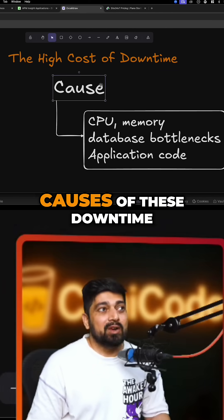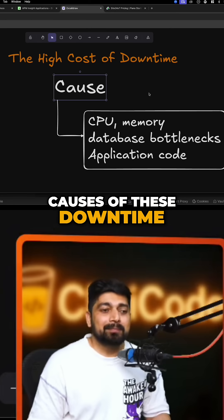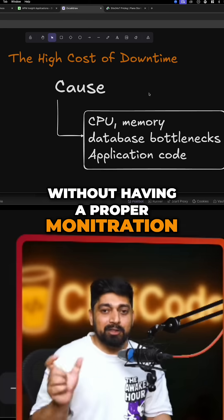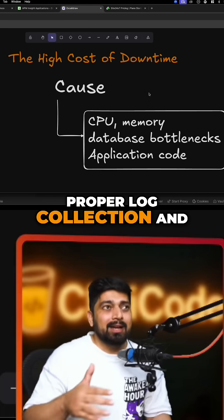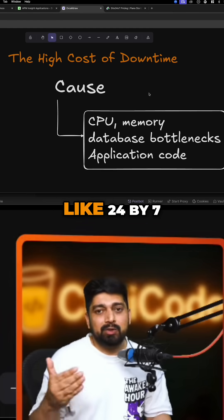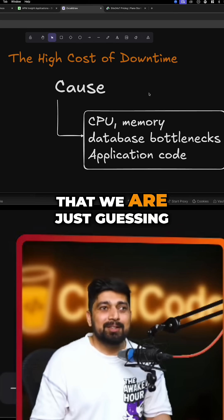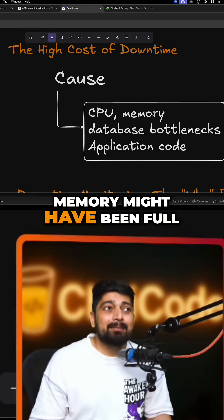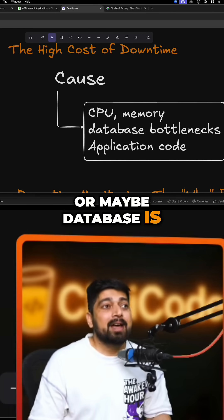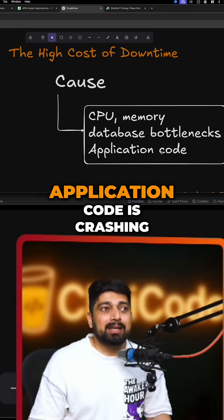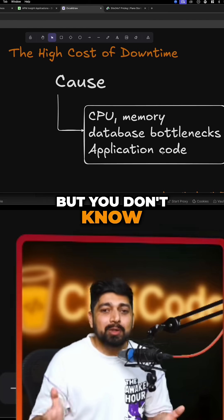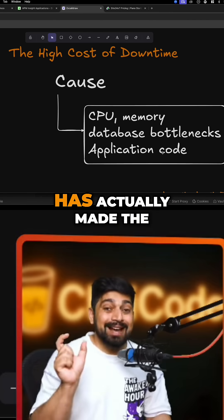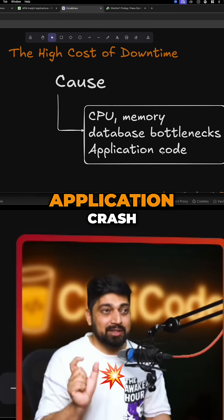What are the causes of downtime? Without proper monitoring, proper log collection, and proper setup of tools available 24/7, you're always just guessing. It could be a CPU issue, memory might have been full, the database might have a bottleneck, or your application code could be crashing — but you don't know the exact reason or which specific trigger or user action actually made the application crash.